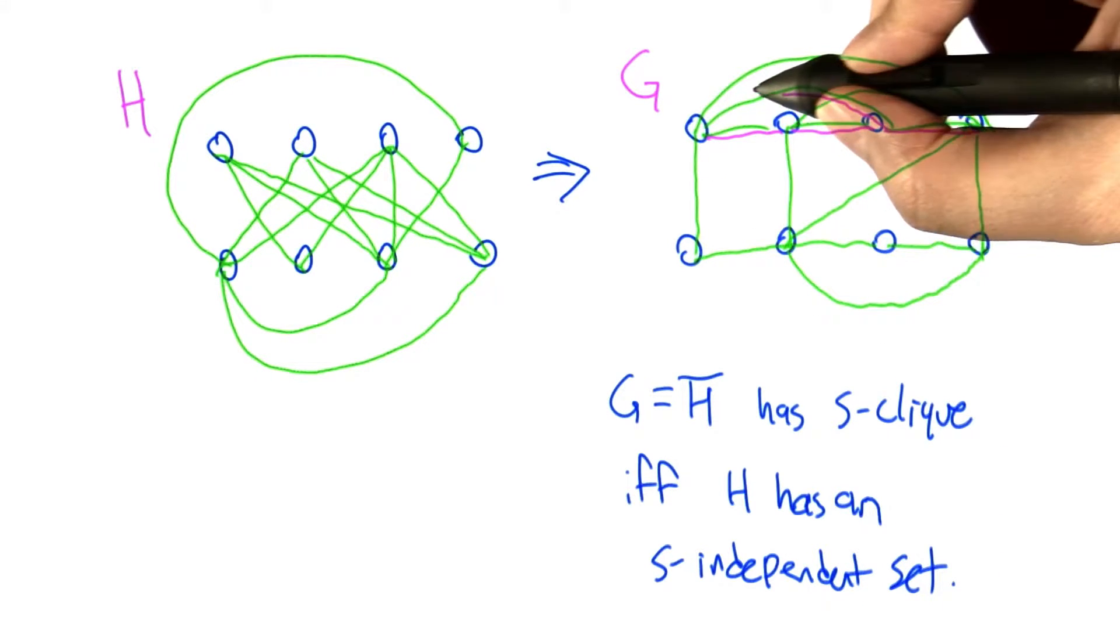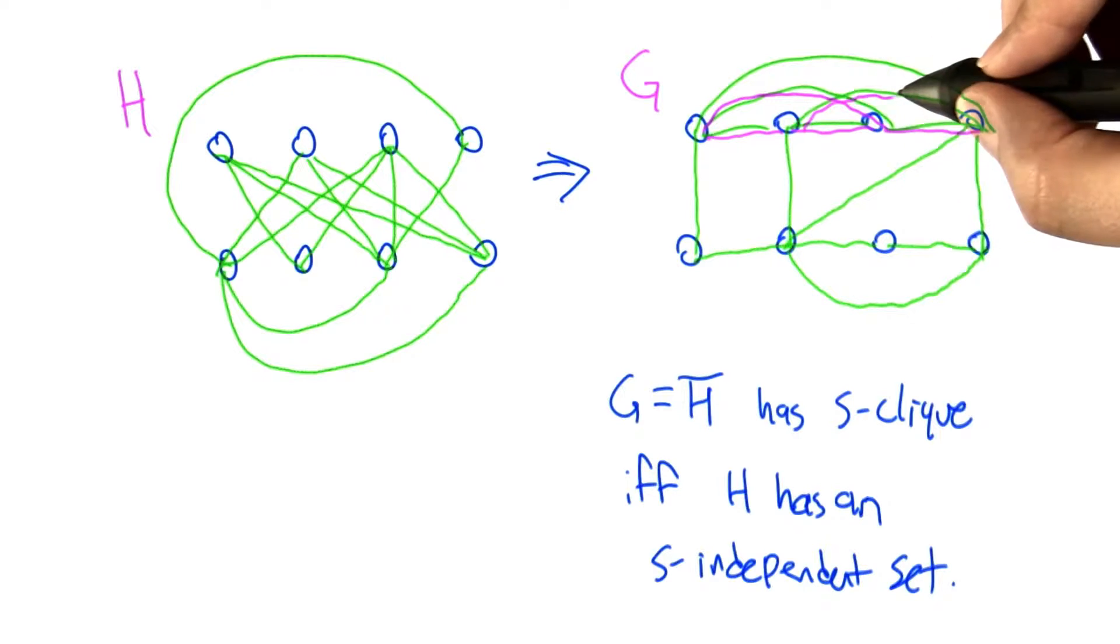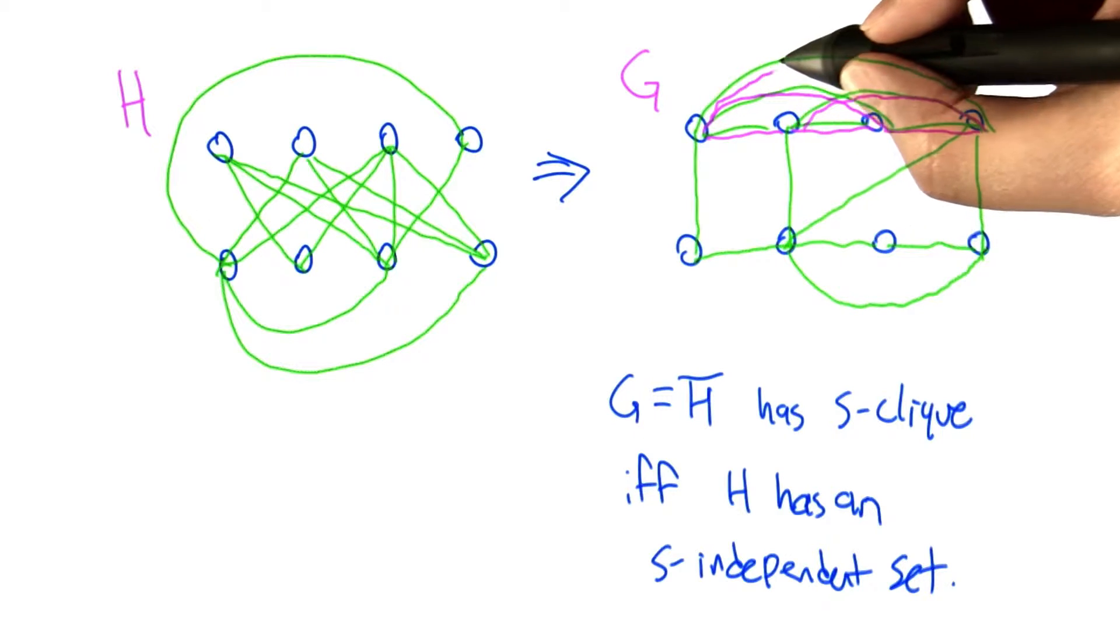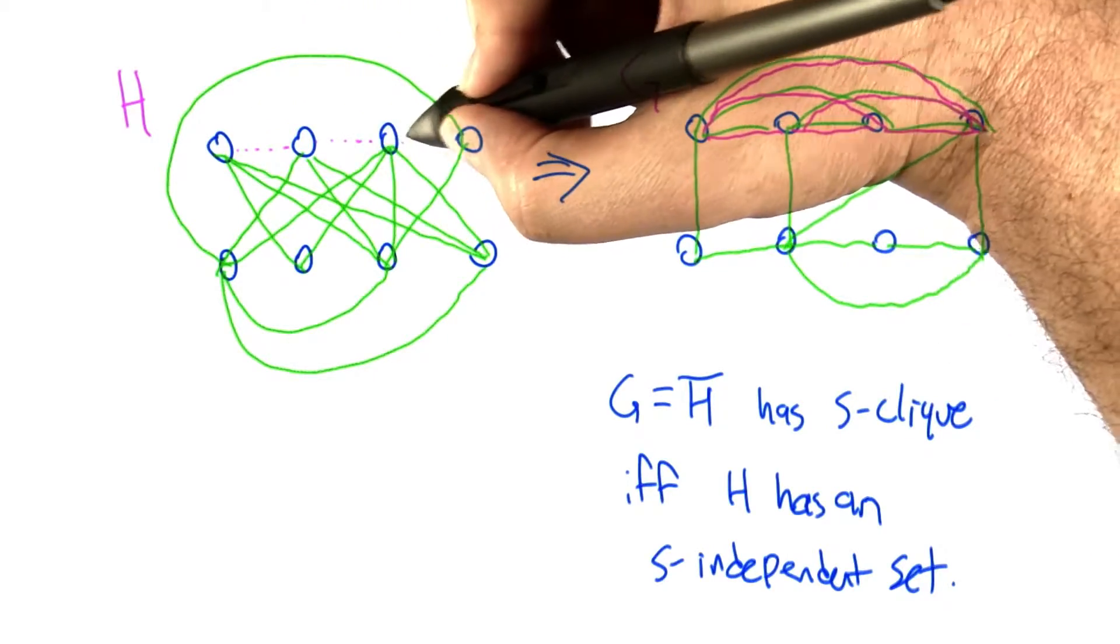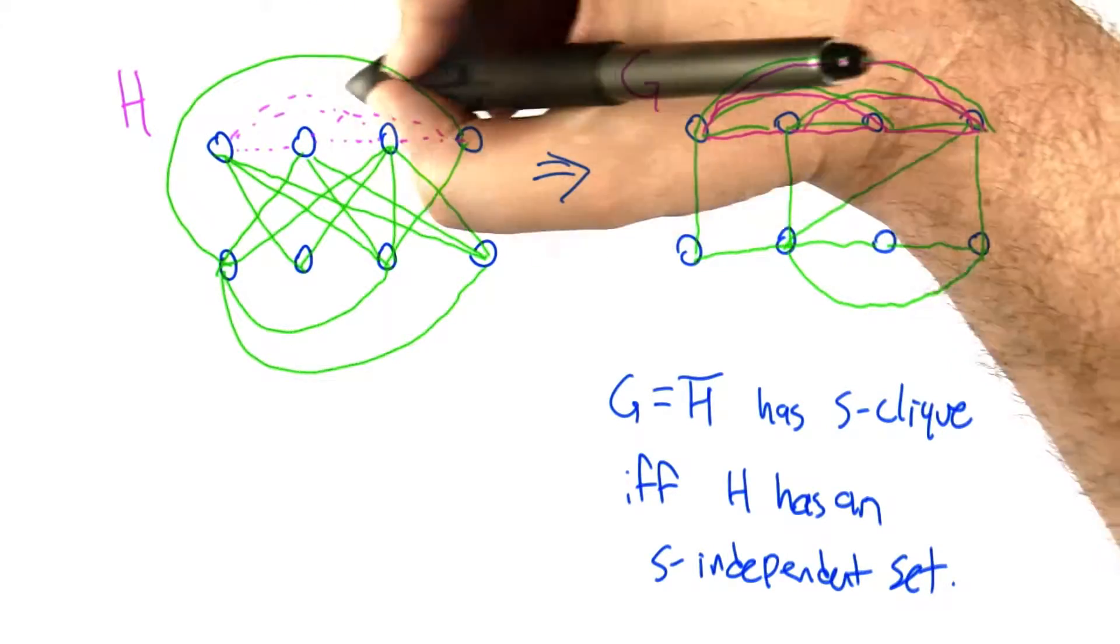Here's our four clique, for example. This is similar to the graph that we looked at before. This is our four clique in G. If we look, that corresponds exactly to a four independent set in H.